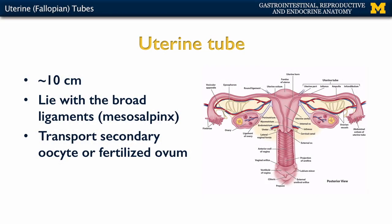The uterine tubes are about 10 centimeters each. Similar to the ovaries, there is an association with the broad ligament of the uterus. What's unique about the uterine tubes is this portion of the broad ligament, the mesosalpinx, actually completely surrounds the uterine tube. This makes it the only pelvic organ of the female that's considered intraperitoneal.